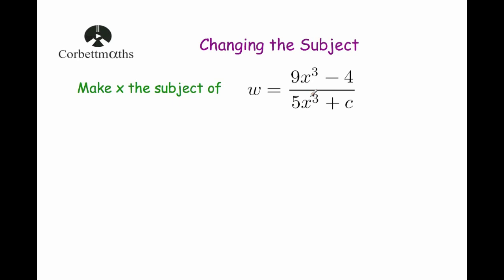We've got this 5x cubed plus c on the denominator. First of all, let's bring that up. We're going to multiply both sides by 5x cubed plus c. That gives us w bracket 5x cubed plus c close brackets equals, and we multiply the right hand side to get rid of the divide by 5x cubed plus c, so it'll just leave us with 9x cubed subtract 4.